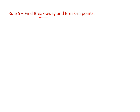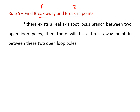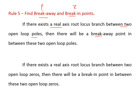The fifth rule is to find the breakaway point and break-in point. The breakaway point exists between two poles, and the break-in point exists between two zeros. If there is a real axis root locus branch between two open loop poles, there may be a breakaway point; if between two open loop zeros, there will be a break-in point.